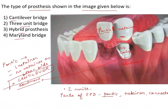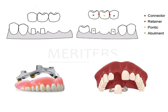The question can become confusing if you know this is a cantilever bridge but don't know the other options. For a three-unit bridge, you understand this cannot be a three-unit bridge because we can see only two units — so that option is gone. If you don't know what a hybrid prosthesis is, it may get confusing, so let's have a look at images of the other types of restorations.